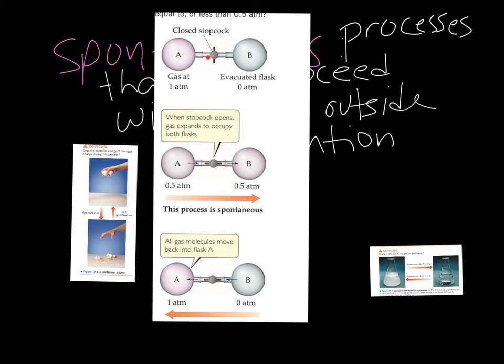Here I have a closed valve, a closed stopcock. I have gas here at one atmosphere. This gas B is in a vacuum, there's nothing in here. If I open this valve the gas will distribute itself between the two areas spontaneously. Once I open the valve these gas molecules in A are going to move over to B without me doing anything to make that happen.